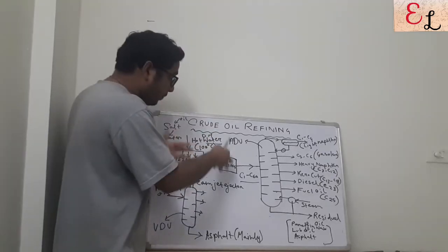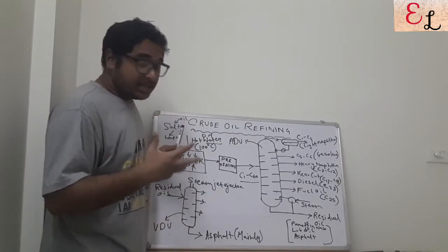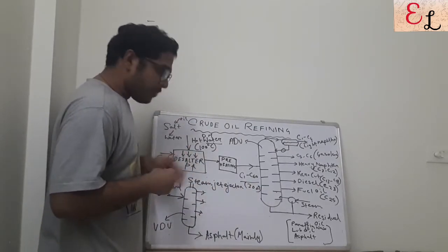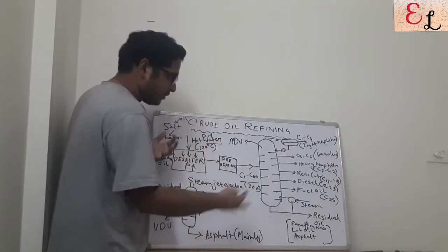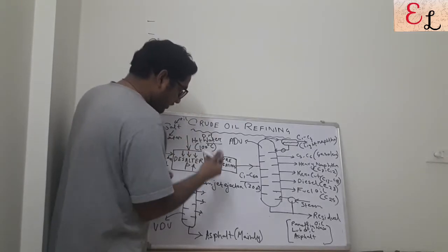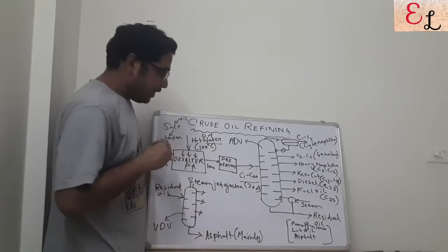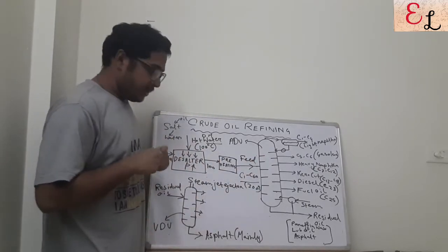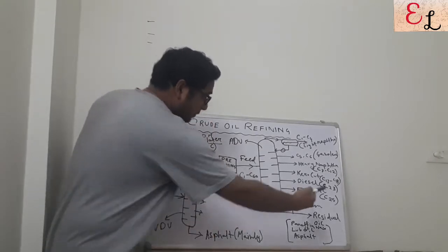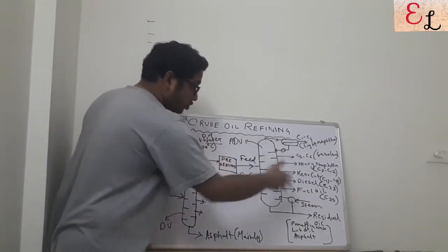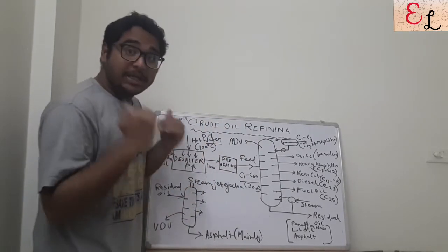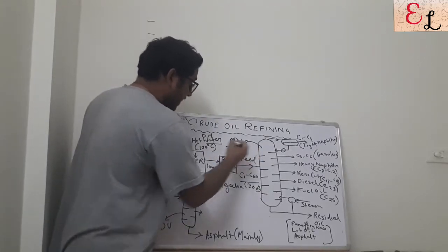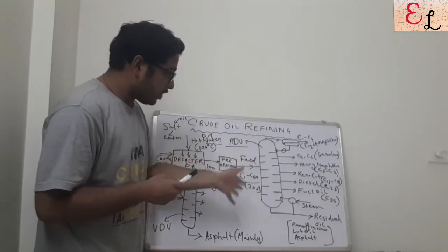After desalting at 100°C, the crude oil undergoes preheating, where its temperature is raised to 300–330°C in two steps before entering the atmospheric distillation column as feed. The feed is crude oil containing C1 to C60. The atmospheric distillation unit, or ADU, operates at close to atmospheric pressure — about 1 to 2 atmospheres. An important question is: why don't we use a reboiler in the ADU?